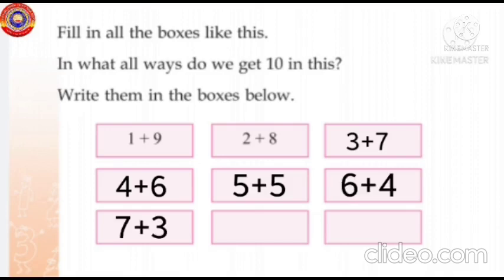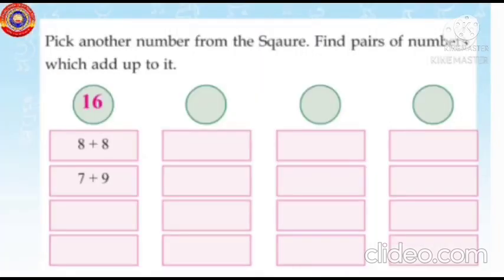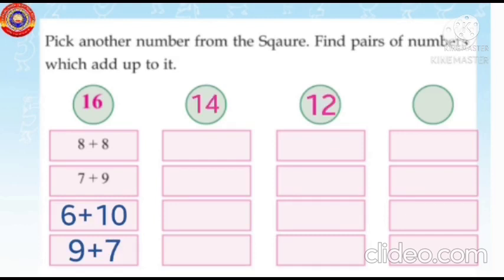Second one, pick other numbers from the square. Find pairs of numbers which add up to it. Which two numbers add together give the sum 16? Yes, 8 plus 8, 7 plus 9, 6 plus 10, and 9 plus 7. Second, 14. Third, 12. Last one, 11. Find the pair of numbers. Do it as a homework activity by yourself.